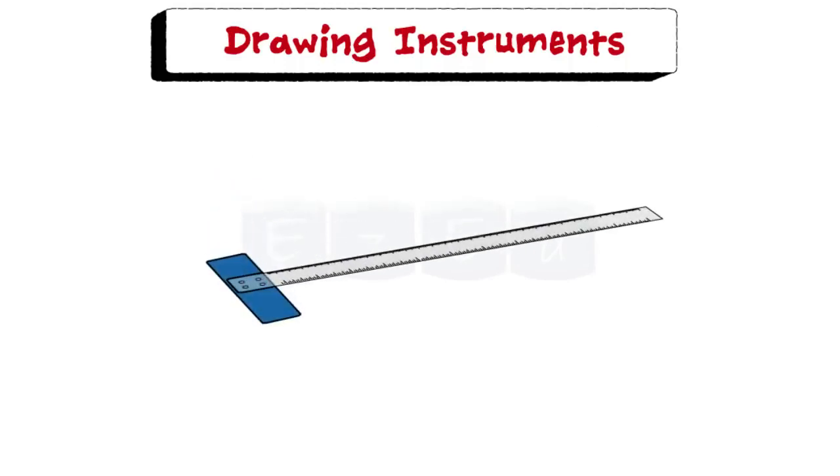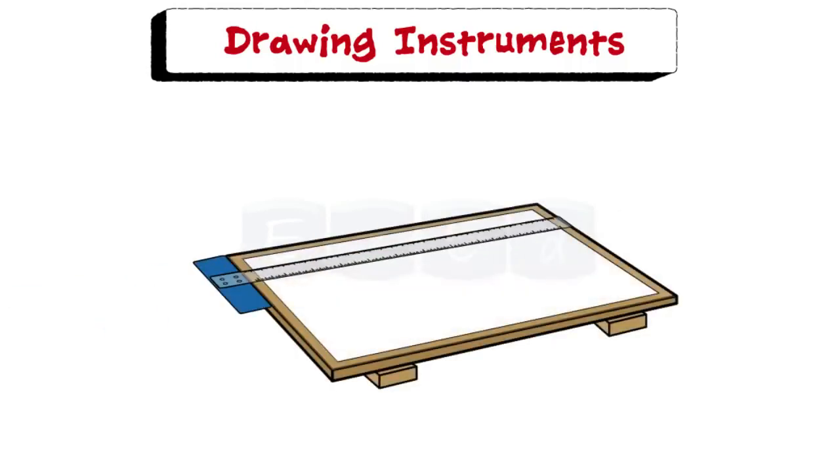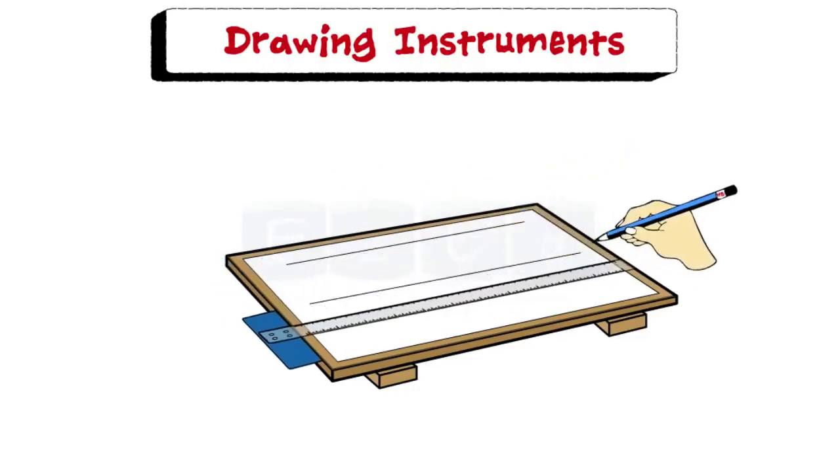Next is the T-square. It is made of two parts, the stock and the blade which are joined together at right angles by means of screws and pins. T-square is fitted at the side of the drawing board and it slides along the edge of the board and is used to draw horizontal straight lines.